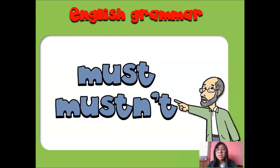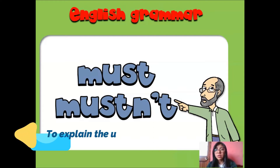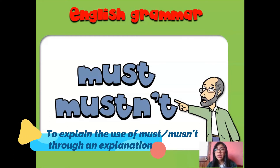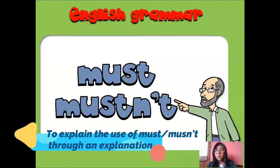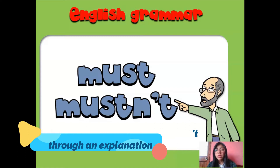Today we are going to review a grammar point referred to must and mustn't. That is the topic. And what is the objective for today? That's right — to explain the use of must and mustn't through an explanation. So today we are going to review that.